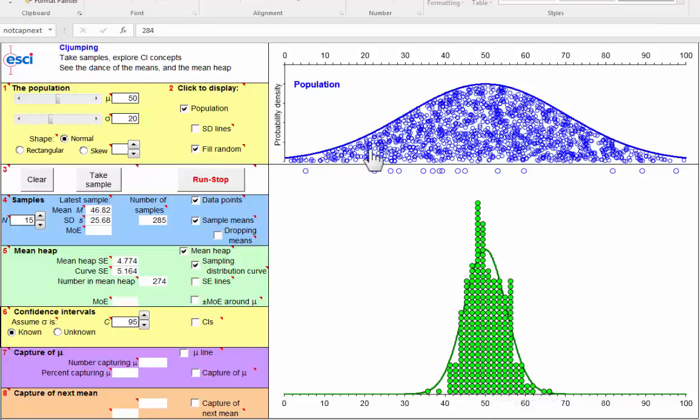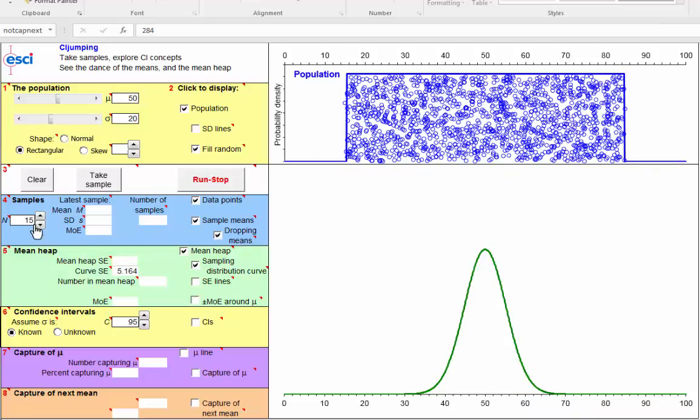Now let's look at populations of a different shape, say a rectangular population. And let's take samples of size 3. So artificially small samples. And here we're taking successive samples and dropping down the means to form the dance of the means for samples of size 3. And we're going to collect these into the mean heap down at the bottom.